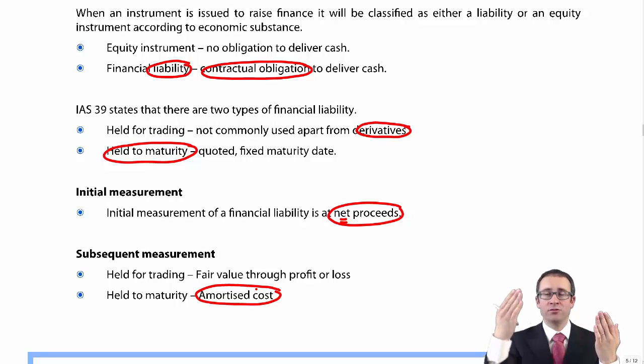The company raising finance, issuing the debt, debits bank and credits financial liability. Whoever is providing the finance credits the bank and debits their financial asset as held to maturity. If I've issued debt, I have an interest expense. If I've bought debt, I have interest income. If I've issued debt, I need to repay the coupon rate and the principal. If we've invested, we want to receive the coupon rate and receive the principal. It's exactly the opposite way round, which is great because hopefully you've mastered your financial assets.